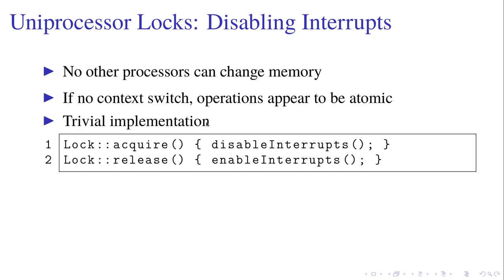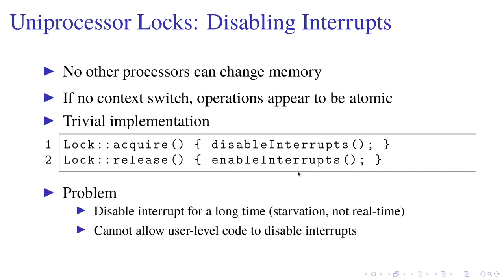The trivial implementation looks like this: acquiring the lock is just disabling the interrupts, and releasing the lock is just enabling the interrupts. However, there's a problem with this implementation because if you disable the interrupts for a long time, other threads will go into starvation and it's not a real-time system design. Also, you cannot allow user-level code to disable interrupts because they may just hang up and the operating system freezes.